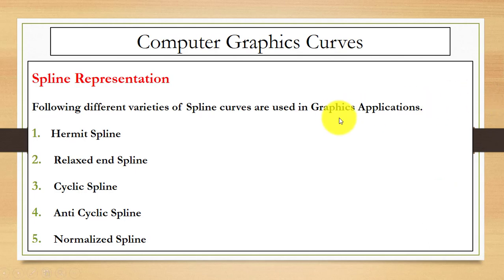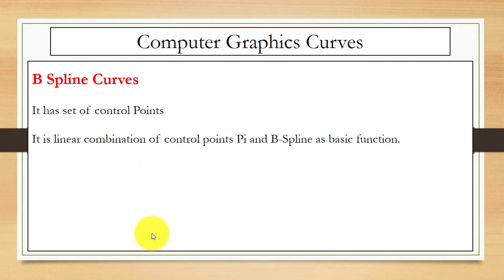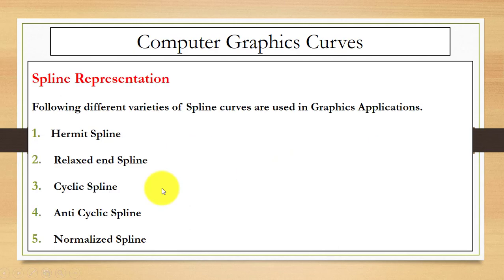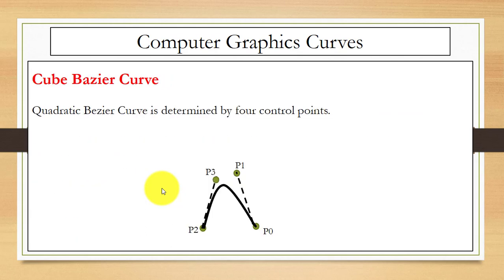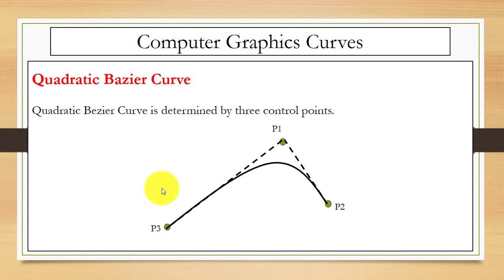Next is the B-spline curve. It is defined by a set of control points and is a linear combination of control points Pi with B-spline basis functions. That covers all the topics in this video: implicit, explicit, and parametric curves, and spline representation. If you have any questions you can comment below — thanks for watching.